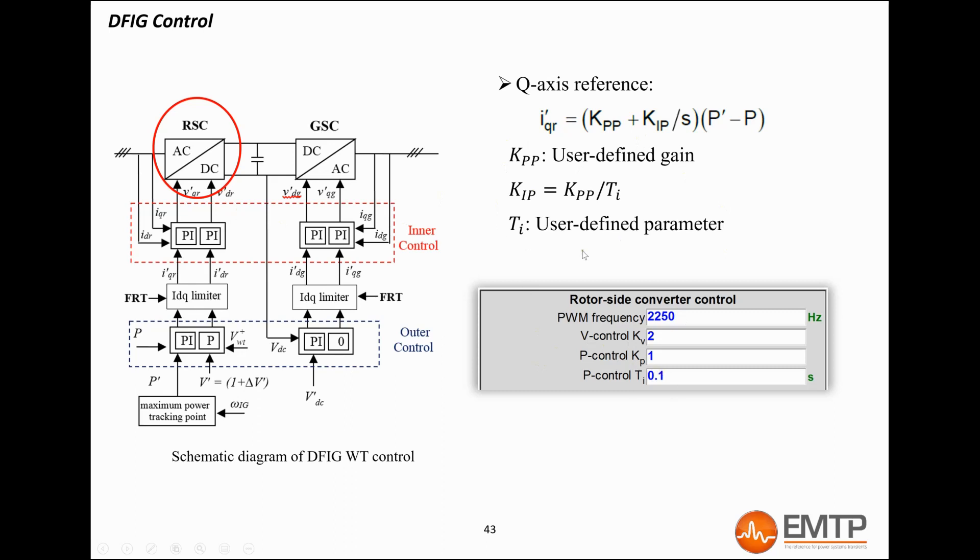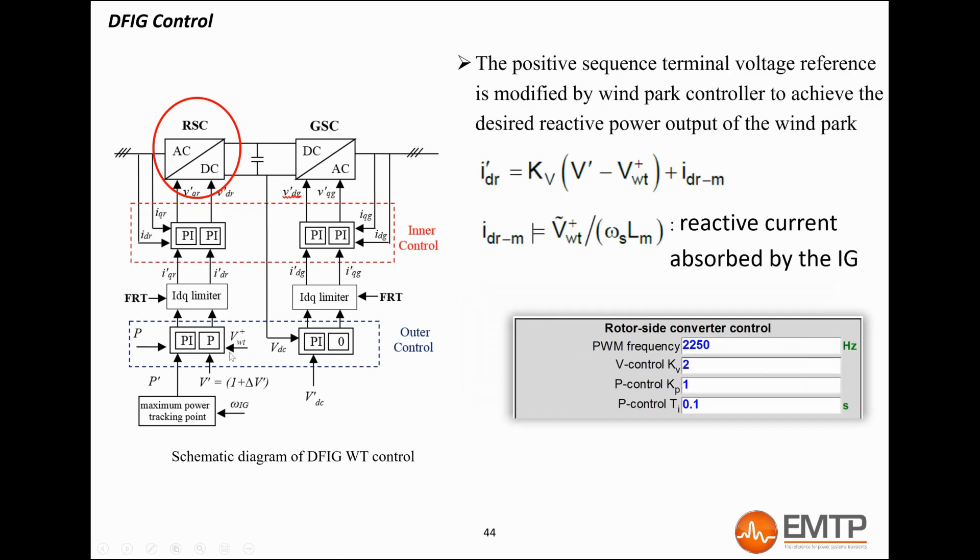The d-axis loop controls the d-axis rotor voltage in order to follow the stator voltage reference sent by the PPC for the park reactive power control. The outer loop produces a d-axis current reference, which is also limited by the limiter and sent to the inner loop, which commands the d-axis voltage. The outer loop here is a proportional controller where the gain is set by user in the mask.